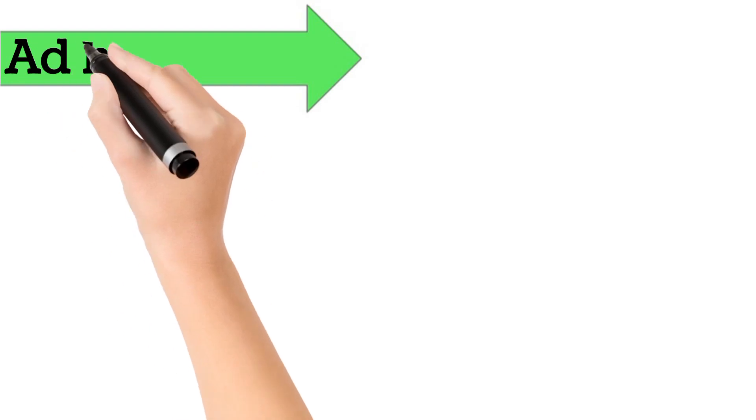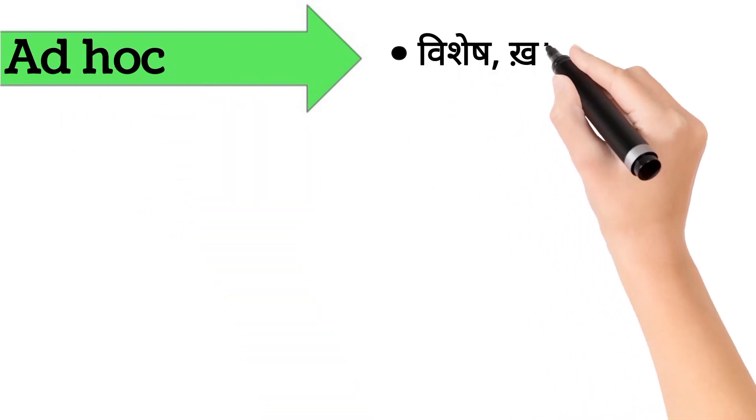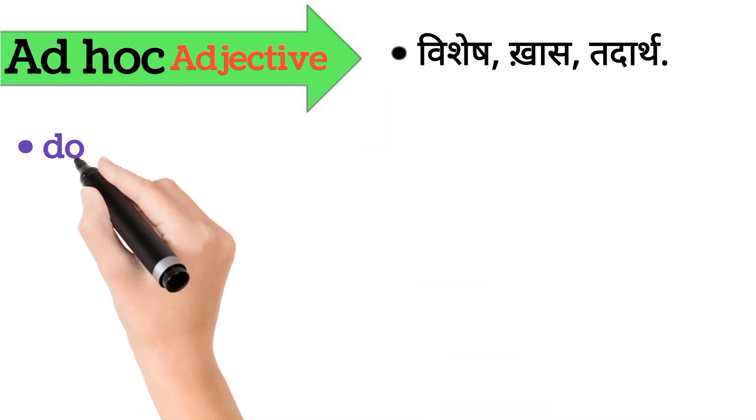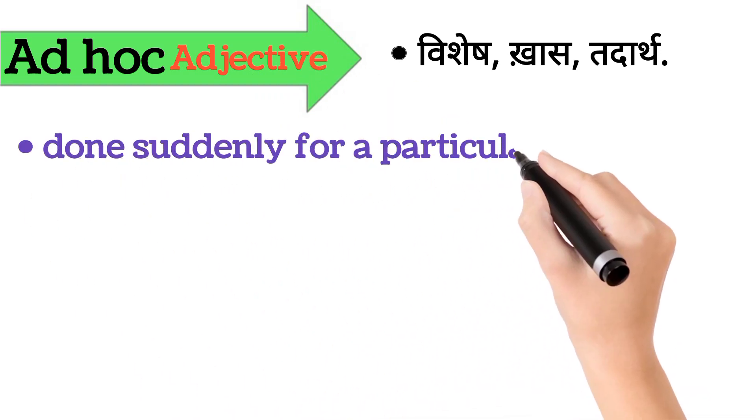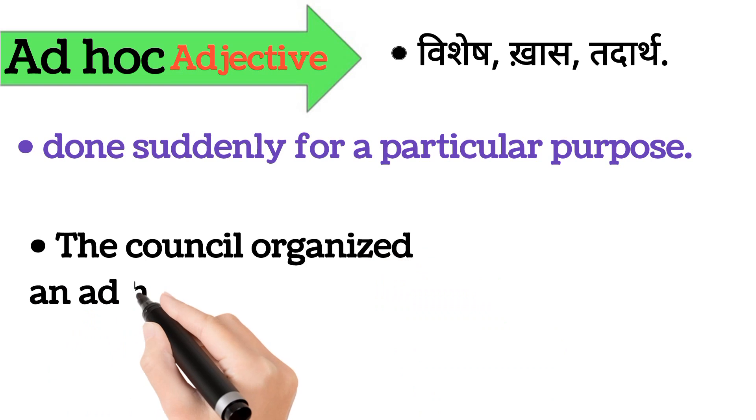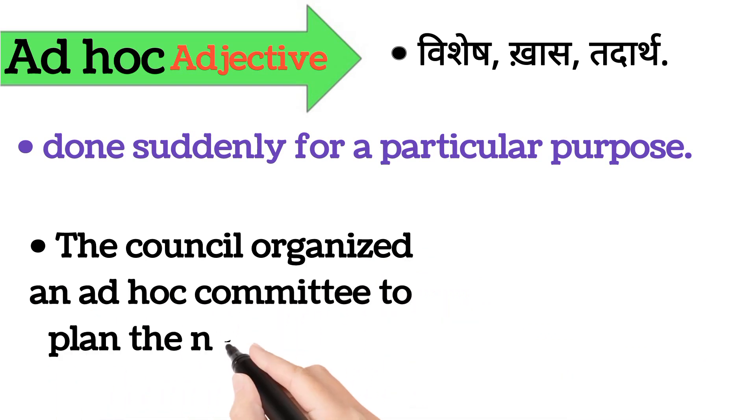Ad hoc. Ad hoc ka arth hai vishesh, khas, tadarthh. Ad hoc word adjective form mein aata hai. It's also called done suddenly for a particular purpose. Iska example hai, the council organized an ad hoc committee to plan the new project.